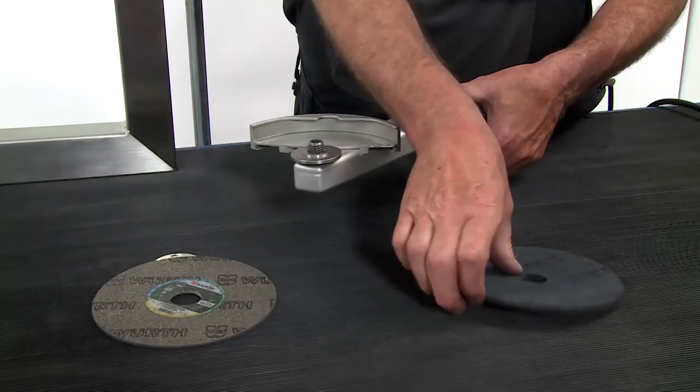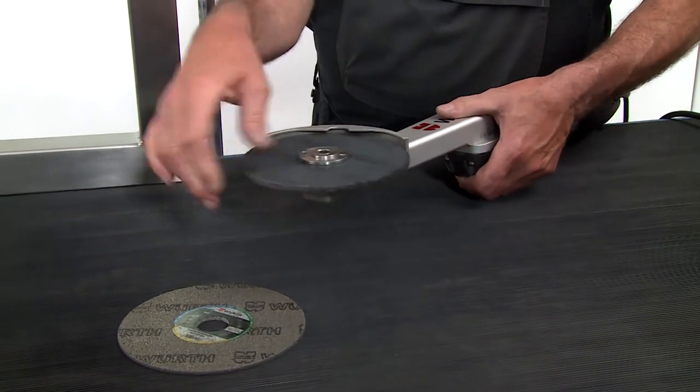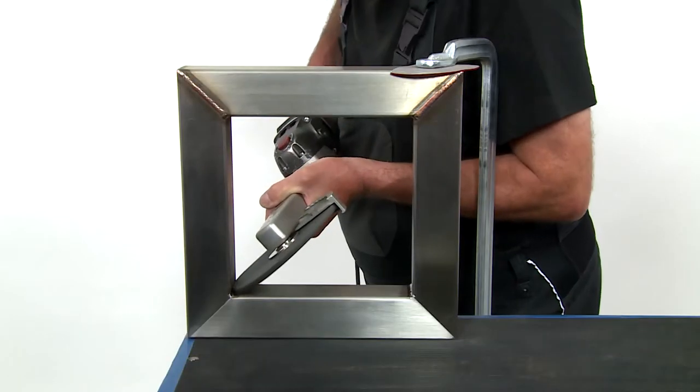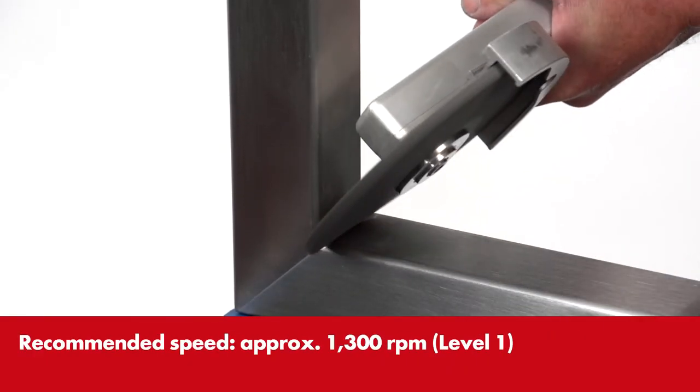Now change to the hard pressed fleece disc hardness grade 5 in 6 millimeters with a slow speed. Work on the weld seam and remove the heat tint colors on the left and right without using pressure.